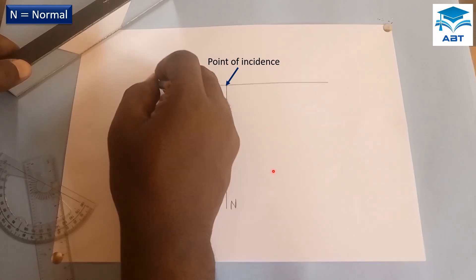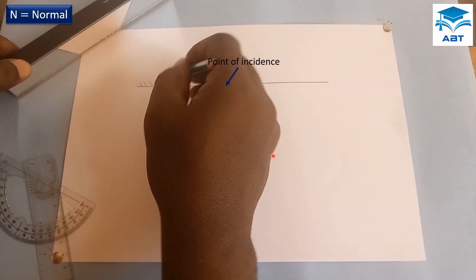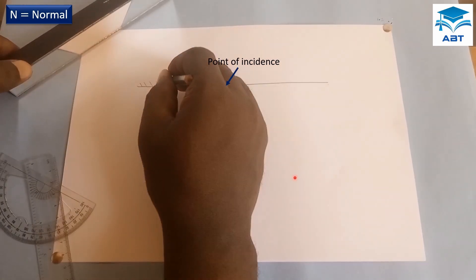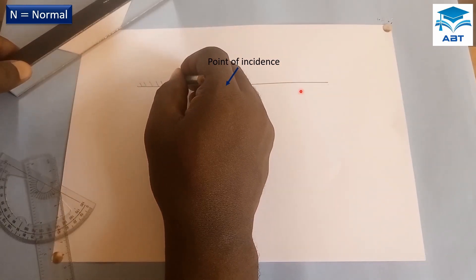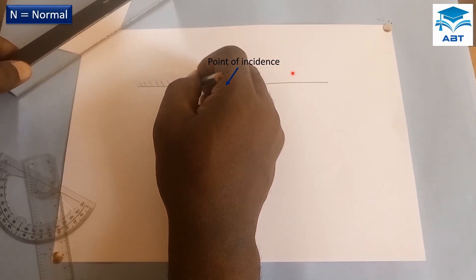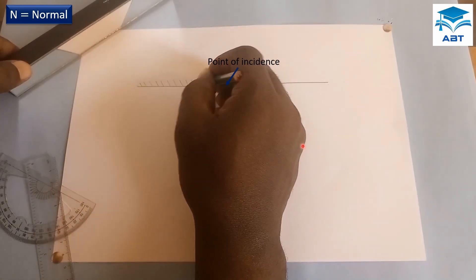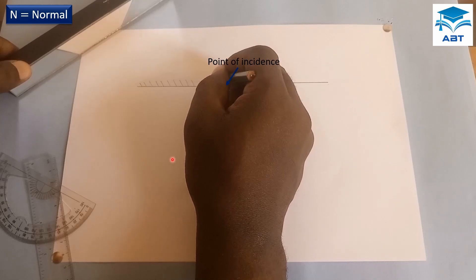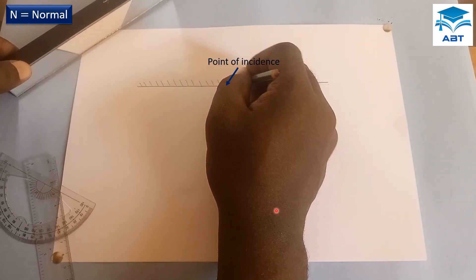This side is going to be the reflecting surface of the mirror, so we shade the other side.